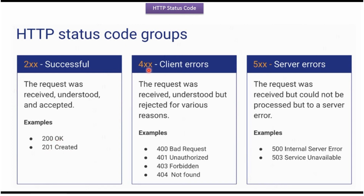The second group is the 400 series status code, which means client errors. The client sent a request to the server; the request was received and understood by the server, but the server rejected the request for various reasons. Examples are 400 bad request, 401 unauthorized, 403 forbidden, and 404 resource not found.